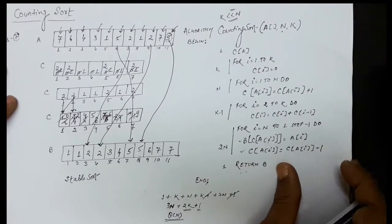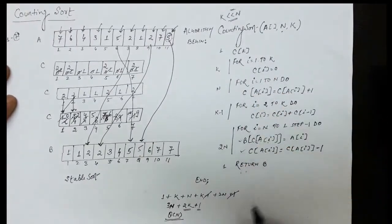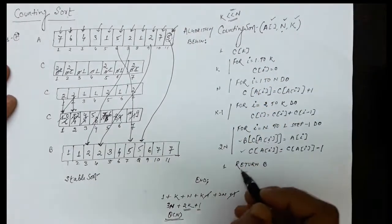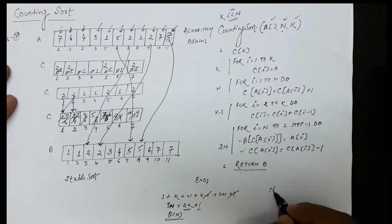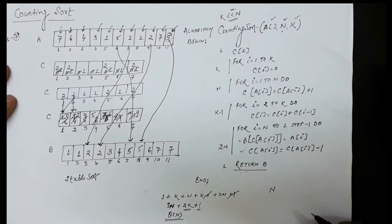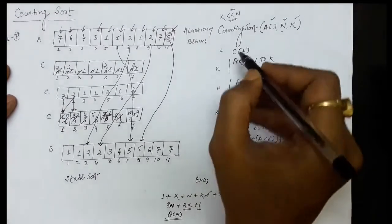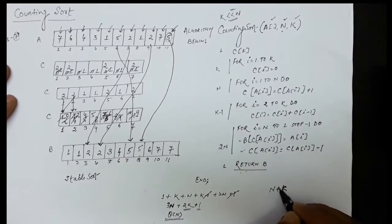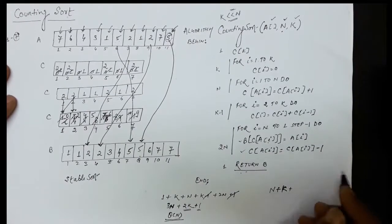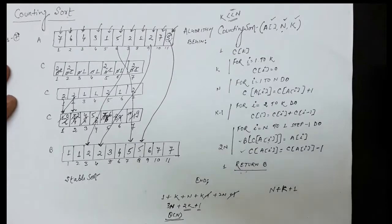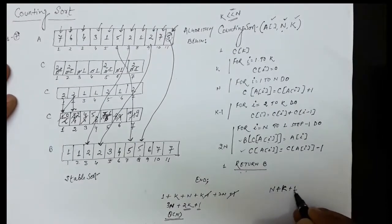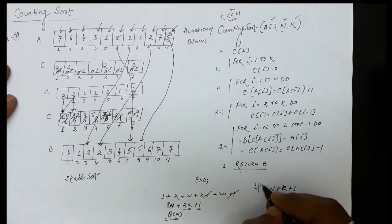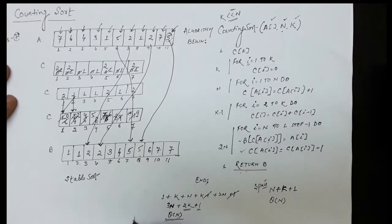For space complexity: N, K, and A are given. We additionally took a B array of size N, a C array of size K, and one loop counter i. So the extra space is N + K + 1, which can be represented as Θ(N). Therefore, both the time complexity and space complexity of counting sort are Θ(N).